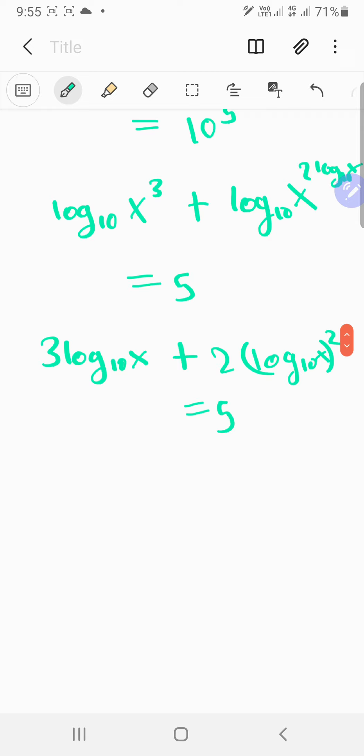So you get 2u^2 + 3u - 5 = 0, right? How can you factor this? Maybe you can factor it like this...